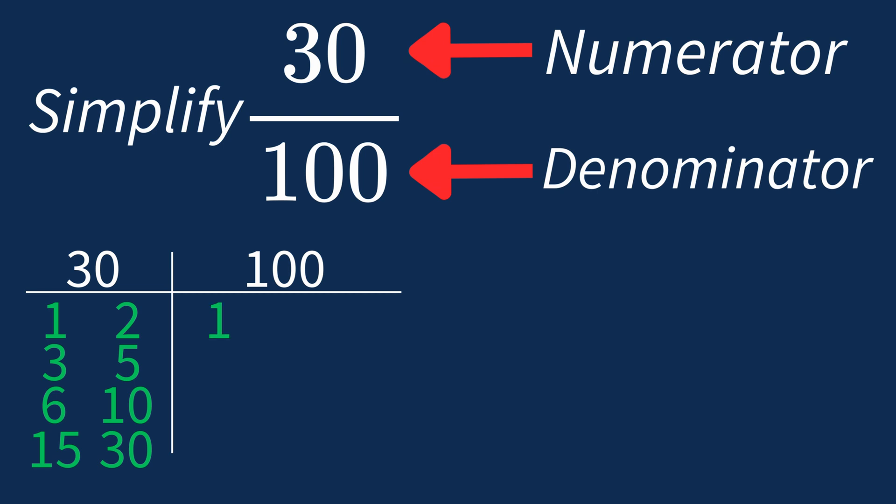For 100, the factors are 1, 2, 4, 5, 10, 20, 25, 50, and 100. So the largest common factor between 30 and 100 is 10.